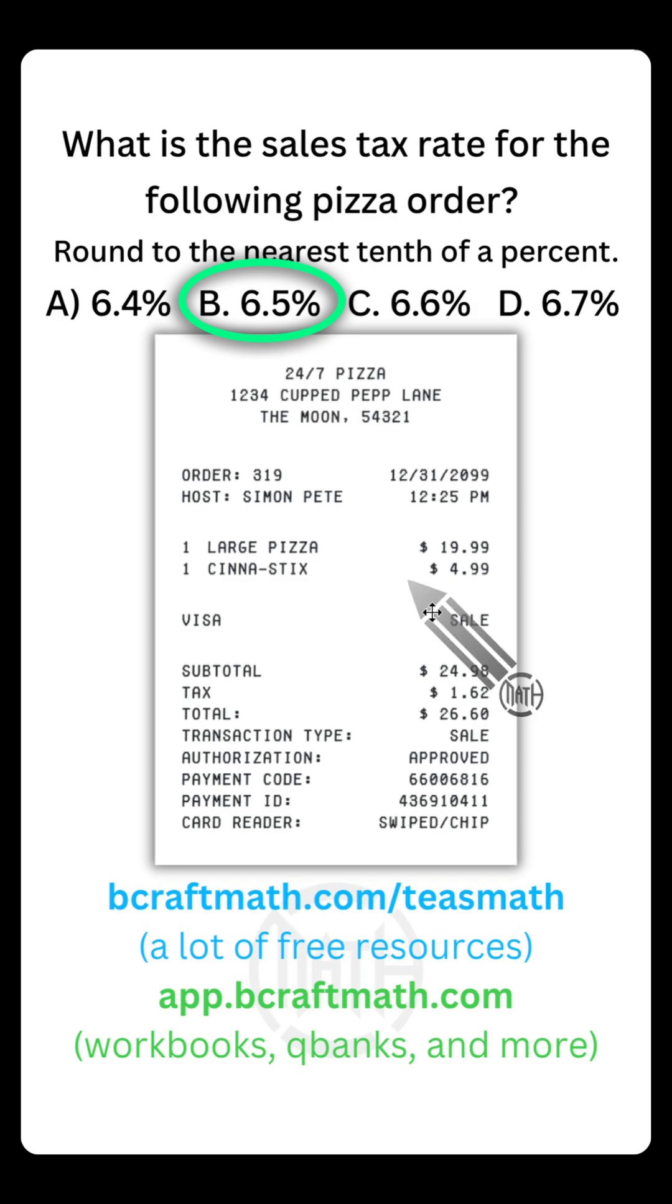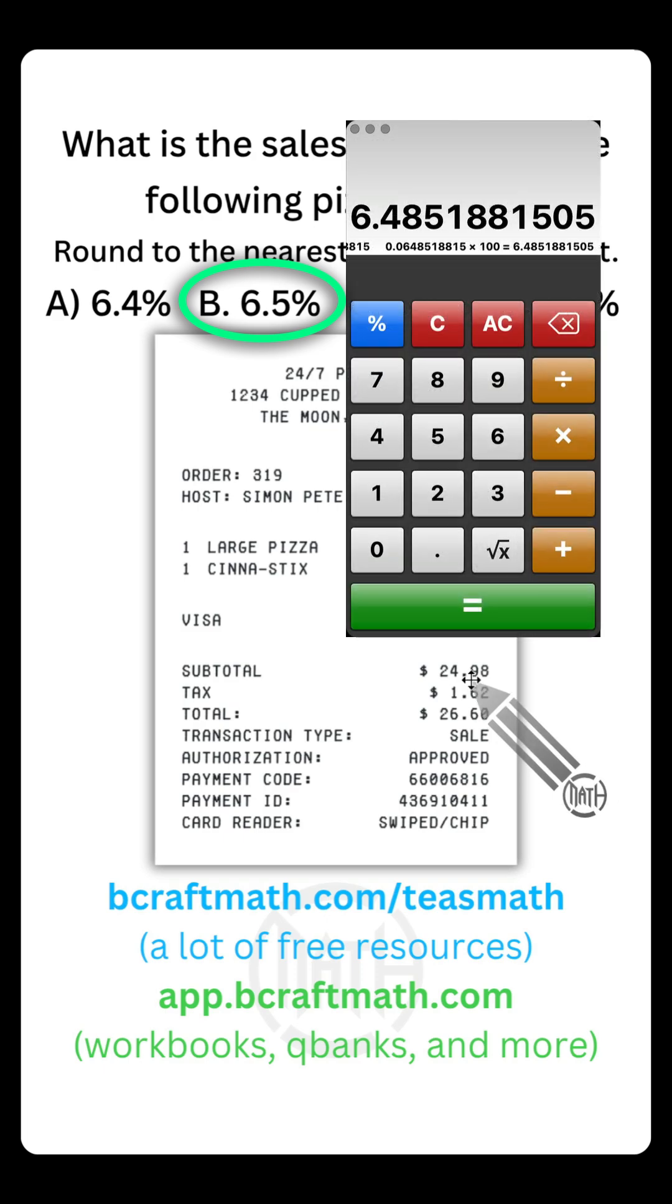Another way that we can do this is we can take our subtotal and multiply by all of these answer choices to see which one gets us the closest to $1.62. And I say the closest because pretty much all of these are going to give us a long decimal. But the way cash registers work, it's always going to print out these values to two decimal places because that's how we handle money.